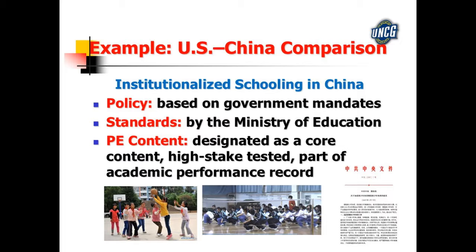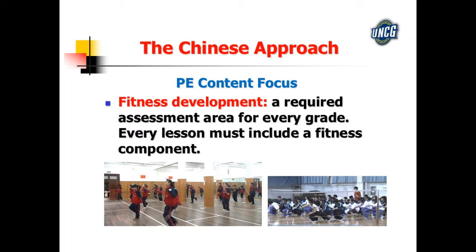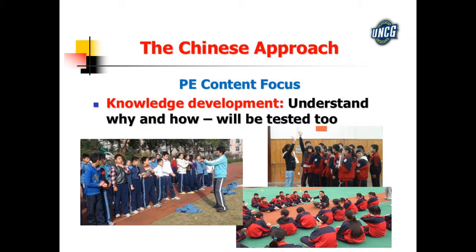Students are tested on skill — they must be proficient in one team sport and one individual sport. This is on their permanent academic record, just like math and English test scores. The second focus is fitness development: students have to participate in physical activity in physical education and other programs, and must pass at least four out of five fitness tests in order to advance. And of course, knowledge — students are tested on knowledge as well. China is known for giving out tests in schools.